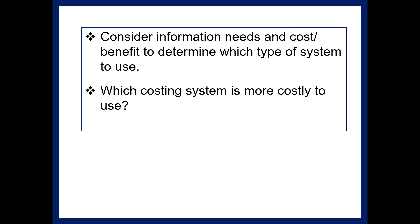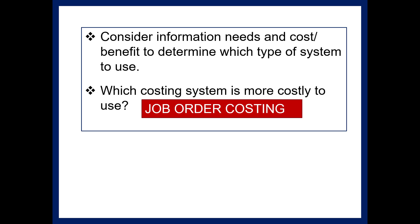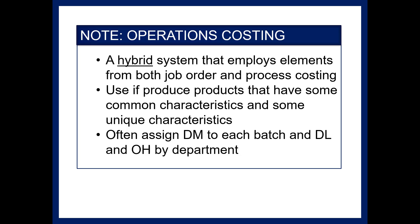You will consider the information needs and the cost-benefit when deciding which system to use. Job order costing is more expensive from a record-keeping standpoint. Also note that there is operations costing, which is a hybrid system used when products have some common and some unique characteristics. We will not cover that in this course, but you should be aware that operations costing exists.